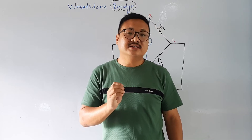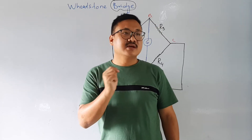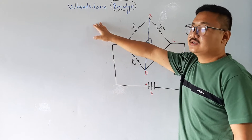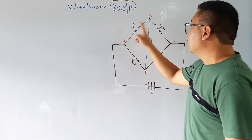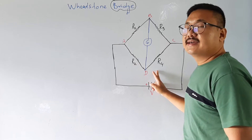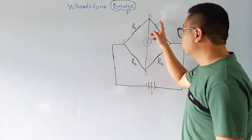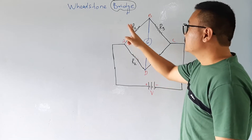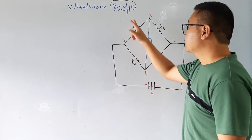In the Wheatstone Bridge there are 4 resistances: R1, R3, R2, R4. Instead of R1, R2, R3, R4 we can also name them as P, Q, R, S — or any other letters we want to use. We can always name them in any form we prefer.